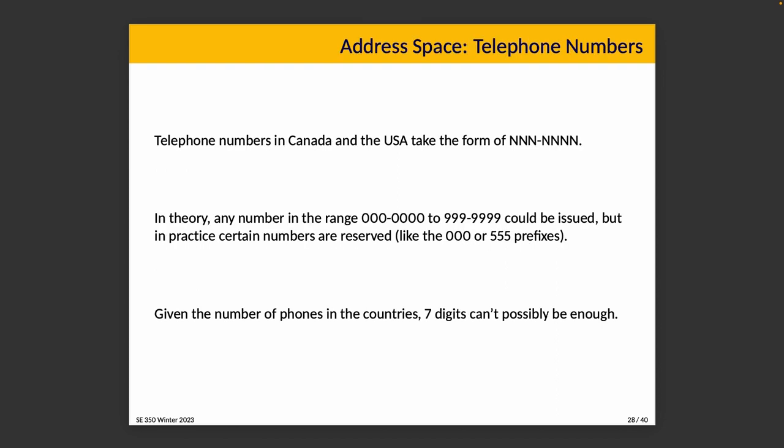Here's the analogy I want us to use: it's like telephone numbers. A typical telephone number in Canada or the United States takes the form of three numbers, then a dash, then four more numbers. Now, you might be thinking that's too few numbers — but hold on.